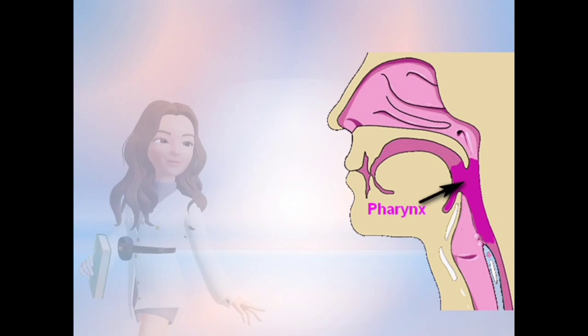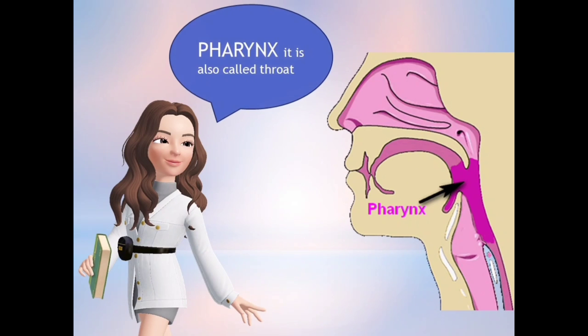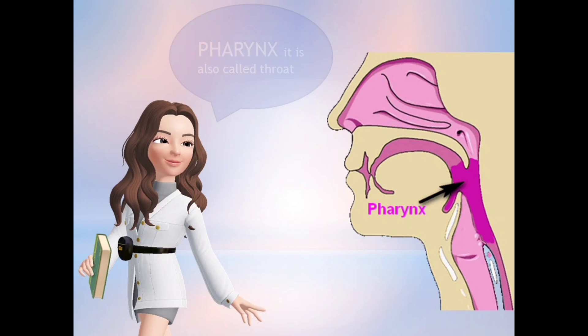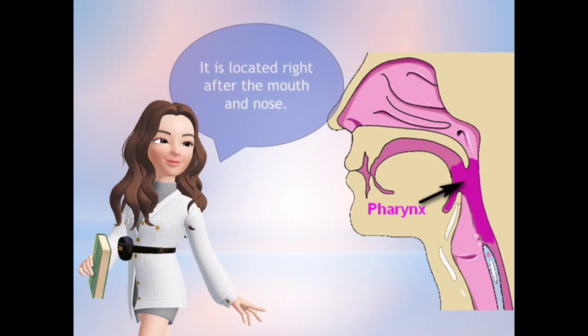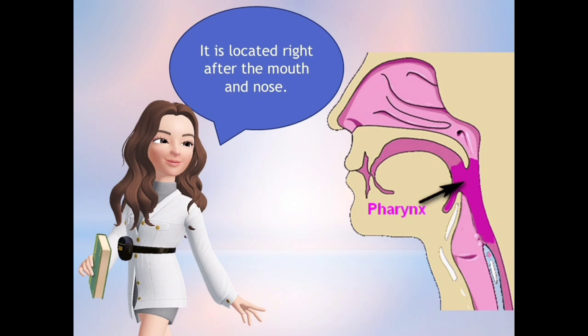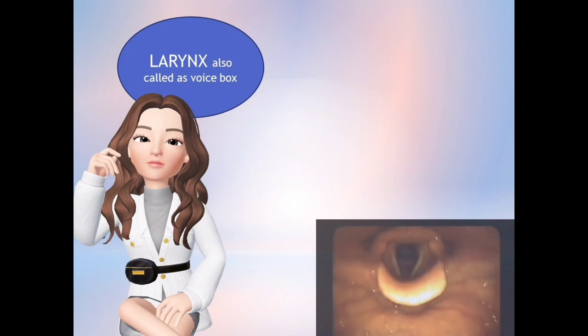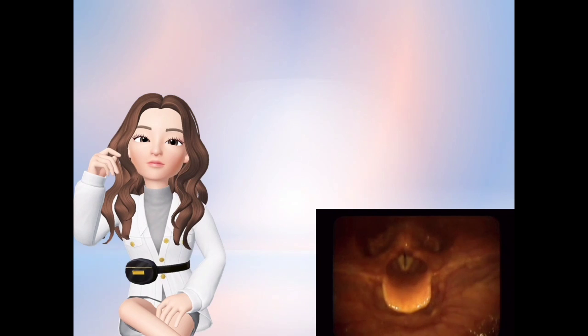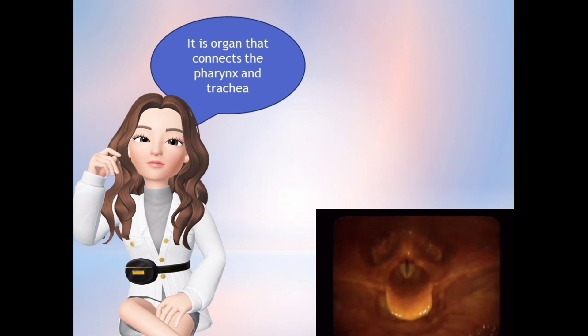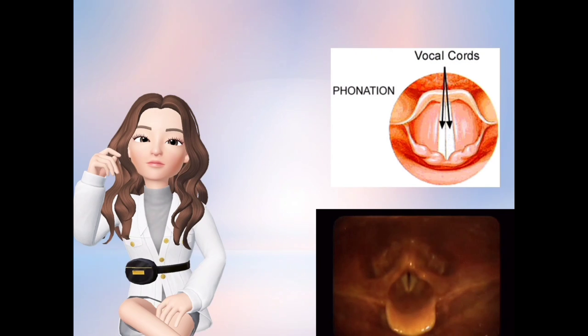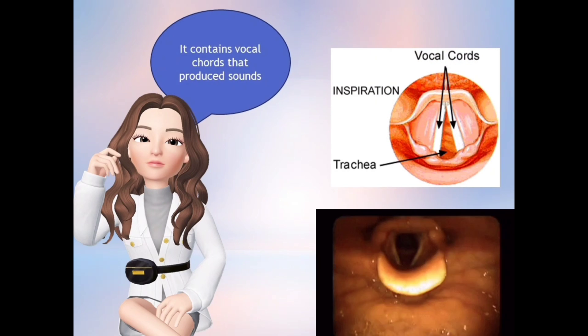Next, we have the pharynx, which is also called the throat, and it is located right after the mouth and the nose. Next after the pharynx is the larynx, which is also called the voice box. It is the organ that connects the pharynx and the trachea, and it contains the vocal cords that produce sounds.